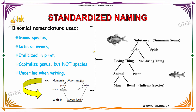Let's talk about standardized naming. Standardized naming is nothing but binomial nomenclature. Binomial nomenclature uses genus and species, Latin or Greek, italicized in printing, capitalized genus but not species, and underlined when writing. The sample example for binomial nomenclature: the human is called Homo sapiens. Homo is the genus and sapiens is the species. Here, the genus is capitalized but not species, and the word is underlined.